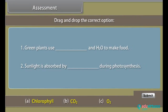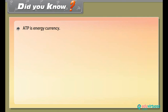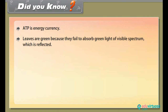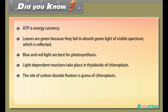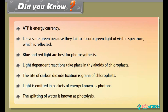Did you know: ATP is the energy currency of the cell. Leaves are green because they fail to absorb green light of the visible spectrum, which is reflected. Blue and red light are best for photosynthesis. Light-dependent reactions take place in the thylakoids of chloroplasts. The site of carbon dioxide fixation is the grana of chloroplasts. Light is emitted in packets of energy known as photons. The splitting of water is known as photolysis.